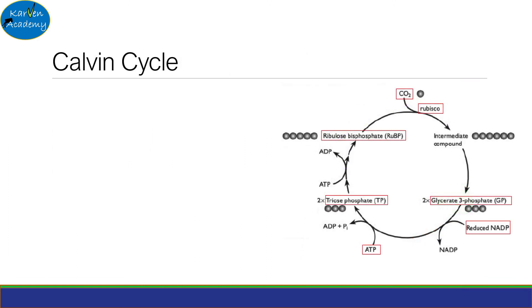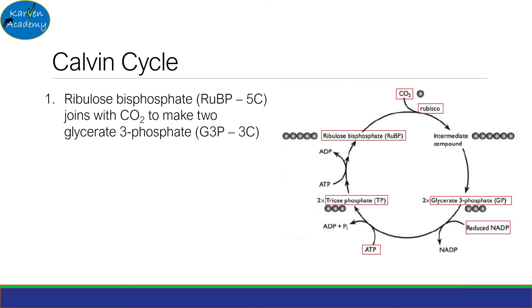Now we come to the last stage of photosynthesis, and this is the Calvin cycle, which is a light-independent stage. There are four main stages.